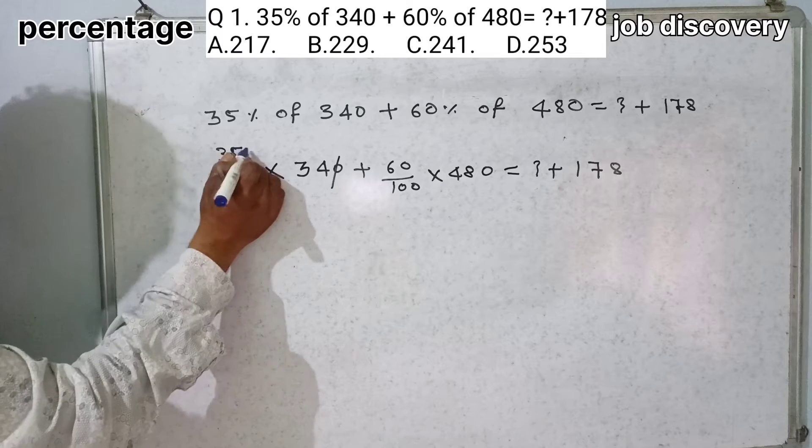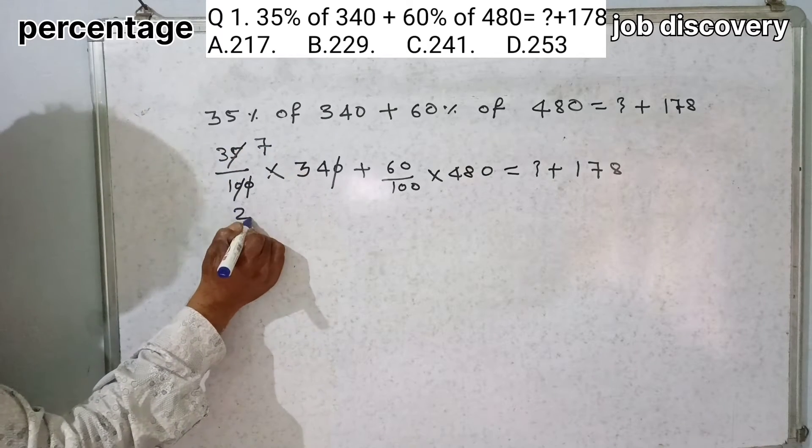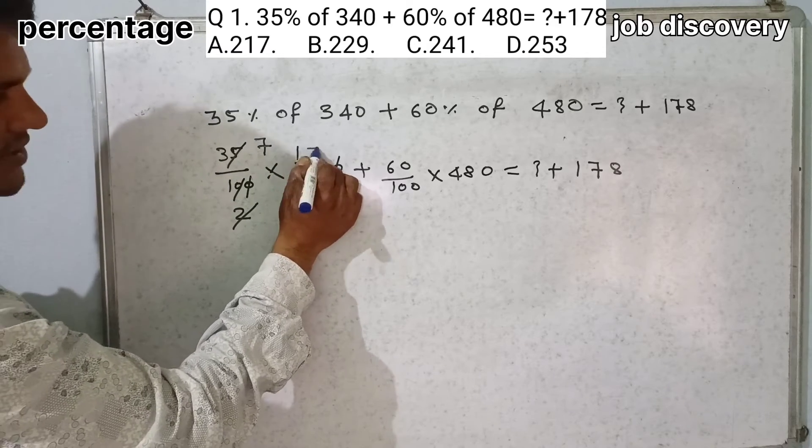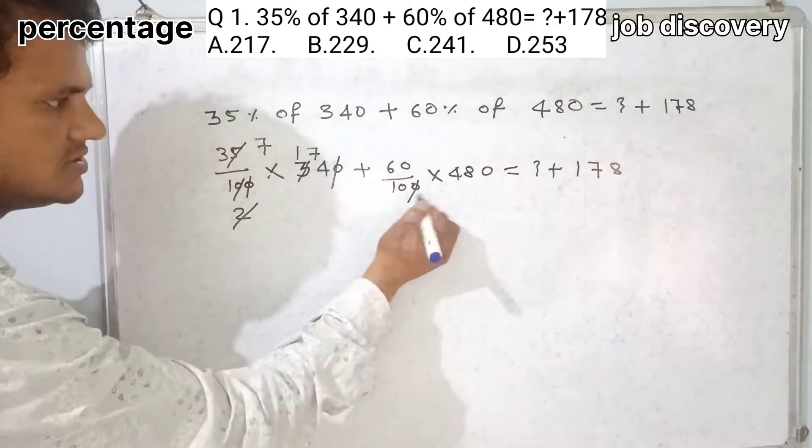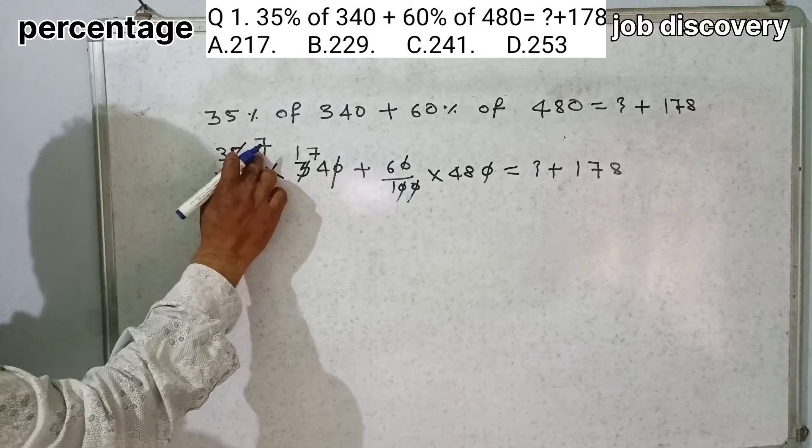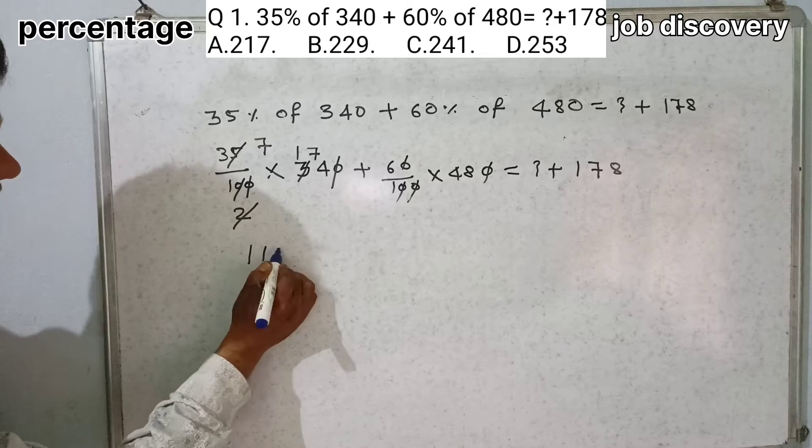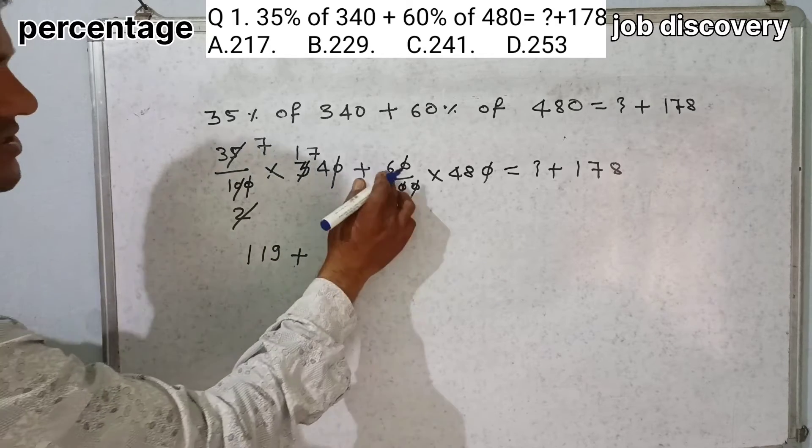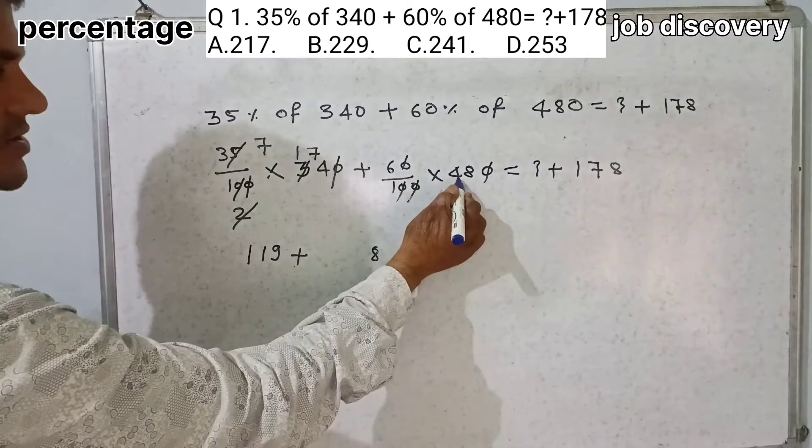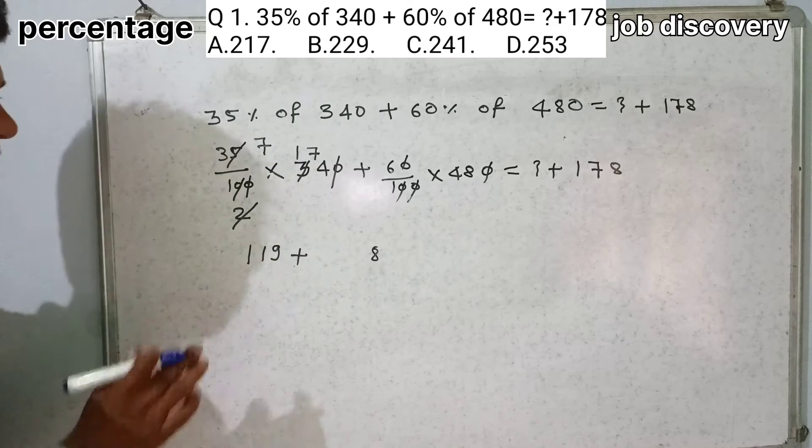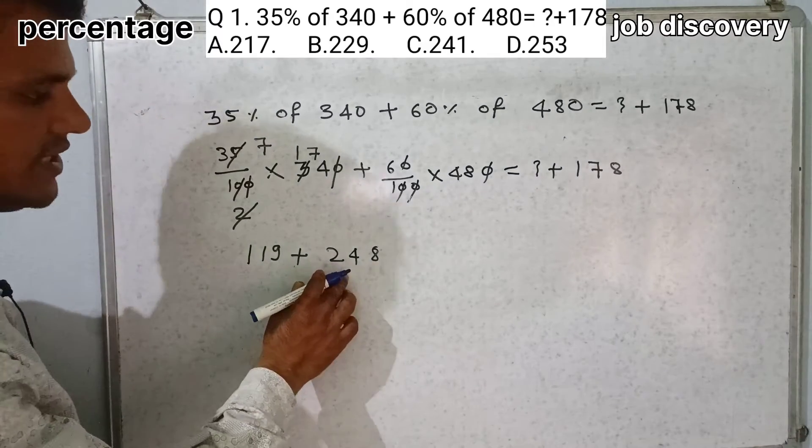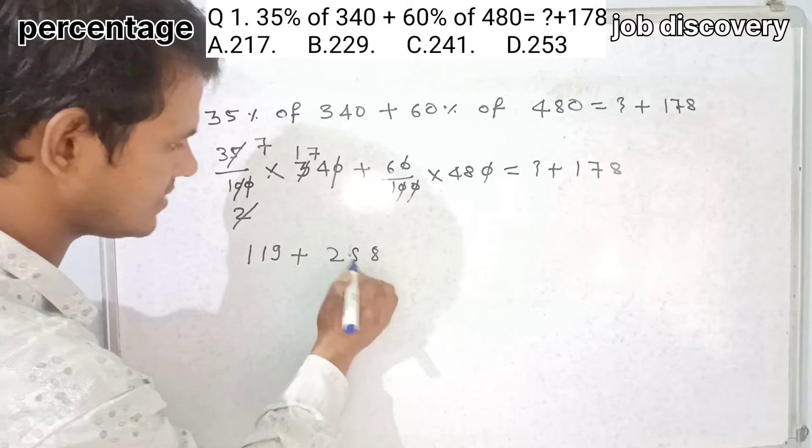0 and 0 gets cancelled. 5 times 7 is 35, 5 times 2 is 10, 2 times 1 is 2, and 2 times 7 is 14. 0 and 0 gets cancelled. So 7 into 17 will be 119 plus 6 into 48. 8 into 6 will be 48, 6 into 4 will be 24. 24 plus 4 will be 28.